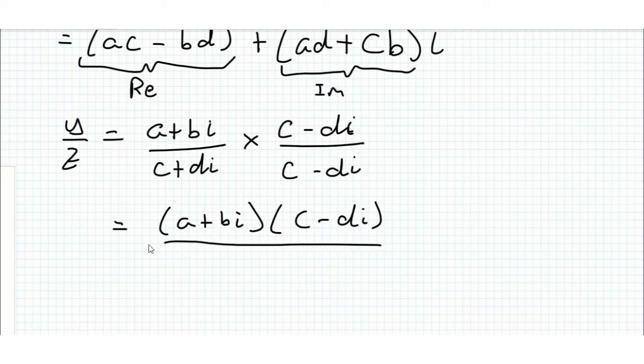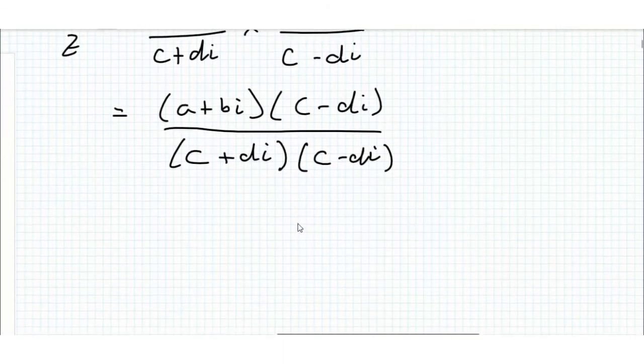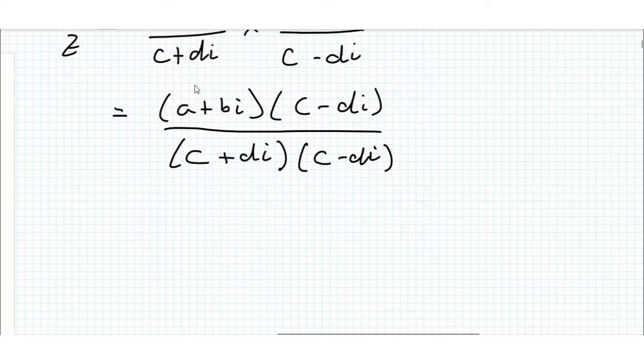And then on the bottom we get this difference of two squares. And if you can remember what I said before about the imaginary part, what we're trying to do is get rid of the imaginary part from the bottom,